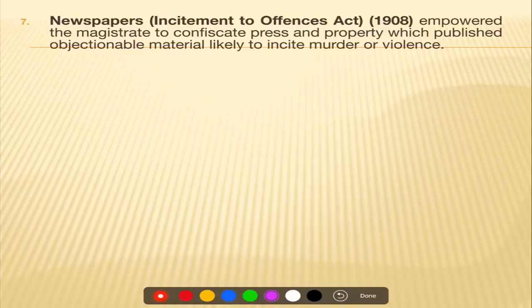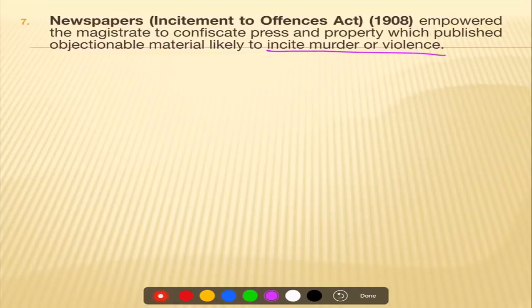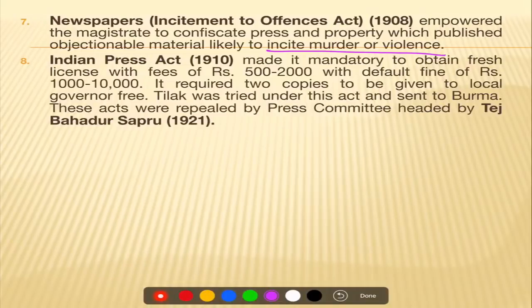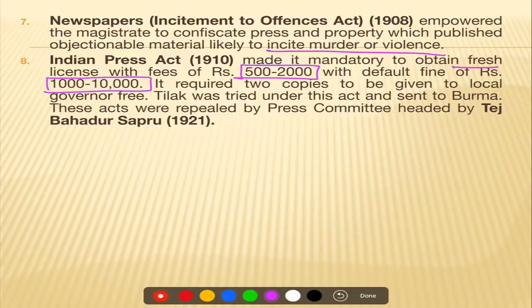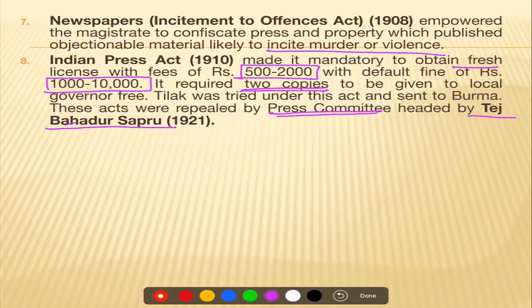The Newspapers Incitement to Offences Act of 1908 empowered magistrates to confiscate press property if any material was objectionable, incited murder or violence. Next, the Indian Press Act of 1910 made it mandatory to obtain a fresh license with fees of 500 to 2,000 rupees; failure to comply resulted in a fine of 1,000 to 10,000 rupees, and two copies of each publication had to be submitted to the local government free of cost. Both these acts of 1908 and 1910 were finally repealed in 1921 by the press committee under chairman Tej Bahadur Sapru.